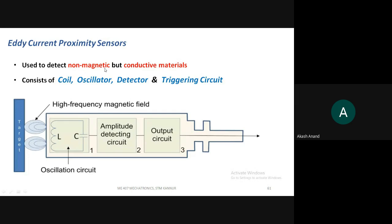The conductive material being detected here is non-magnetic type. You will understand why non-magnetic when you understand the working principle. This is how an eddy current proximity sensor looks — this entire rectangle is called the probe, and the target material is the object whose presence you want to find.